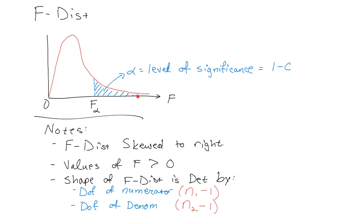Degrees of freedom are just the numerator samples minus 1 and denominator samples minus 1. We use all of that to look up the F-distribution, which is skewed right and always positive. The shape changes with different degrees of freedom — a different peak or broader curve — but it's always skewed. You'll have multiple tables depending on the degrees of freedom and level of significance, and the critical value f-sub-alpha defines the rejection region for your hypothesis test.